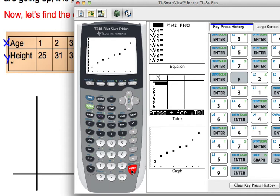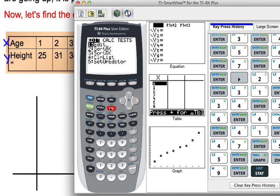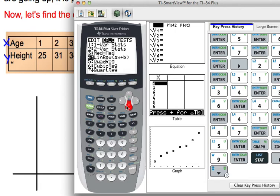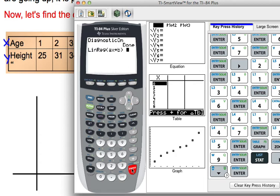Now we want to create our equation for the line of best fit. So we're going to calculate. We're going to push the stat button, arrow to the right, calculate. We want to go down to number 4, linear regression. So scroll down to number 4, linear regression, AX plus B. Push enter.